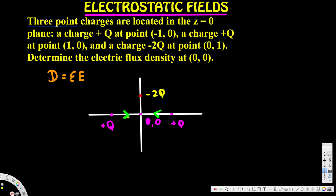The two plus q charges cancel each other out at the origin because they have the same magnitude, opposite directions, and the same distance from the origin. So those two contributions are zero — they have no net effect.